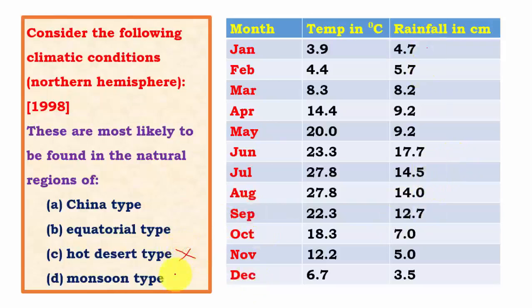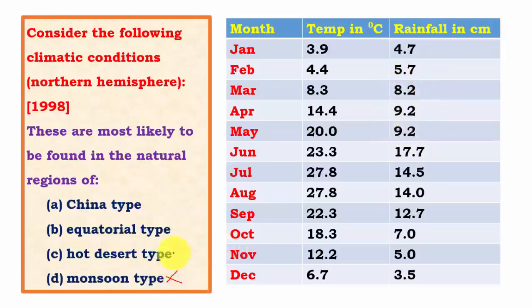Monsoon type has rainfall only in summer months - June, July, August, September - with the region totally dry in winter and extreme summer months. But the graph shows the months of May, April, and March have average rainfall above 6 cm. So monsoon type can also be ruled out.